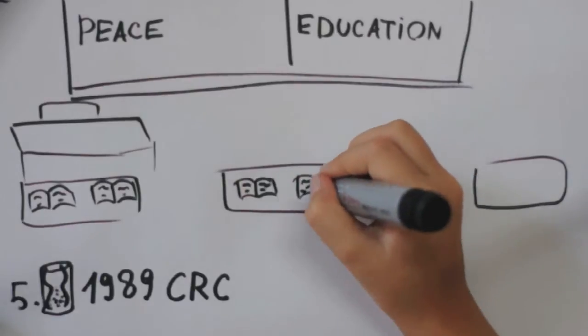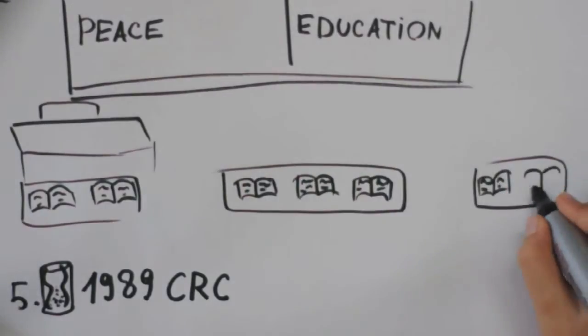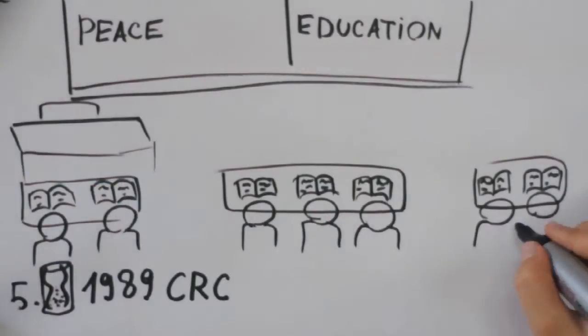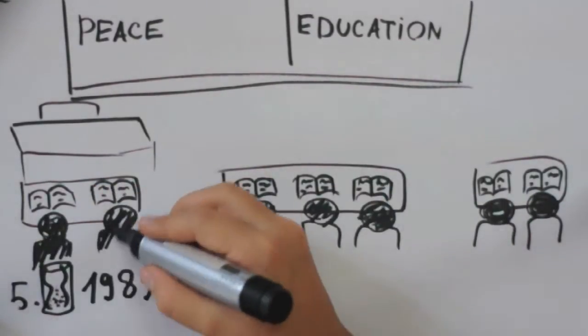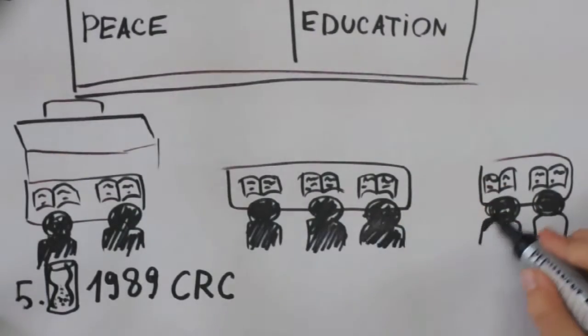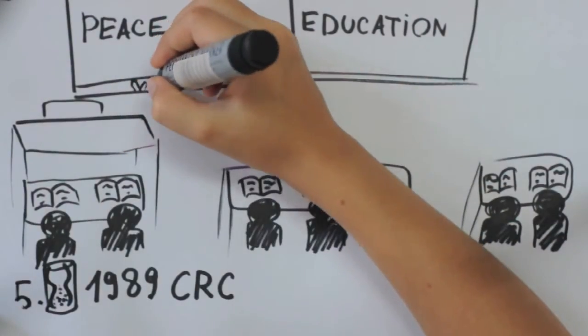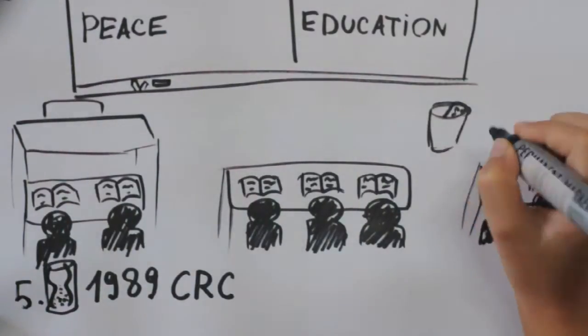It is significant that the framers of the Convention on the Rights of the Child viewed the promotion of understanding, peace and tolerance through education as a fundamental right of all children, not as an optional extracurricular activity.